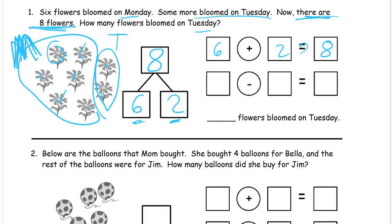And now the subtraction. We started by counting all the flowers and found out there were eight — that's our minuend, how much you have before you subtract. Then we circled the six Monday flowers and took them out. How many were left? There were two. That's the difference between eight and six — they're two apart. Two flowers bloomed on Tuesday.